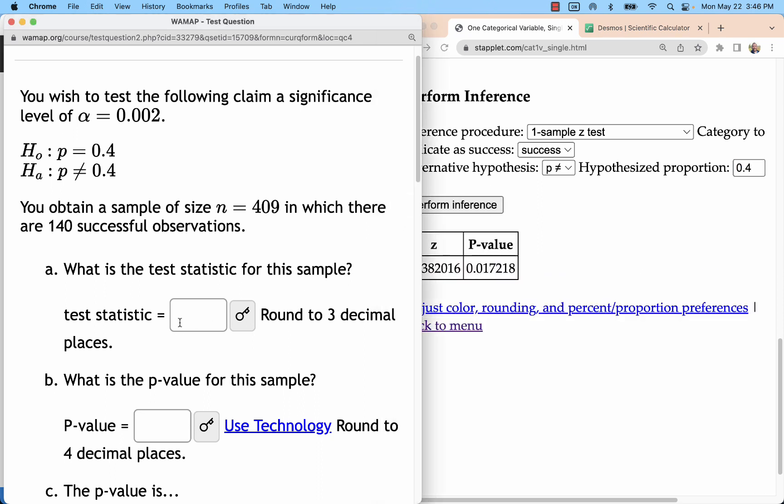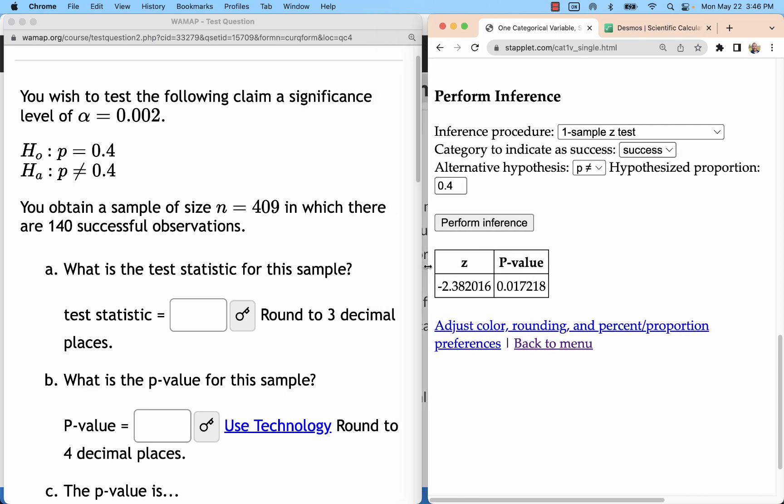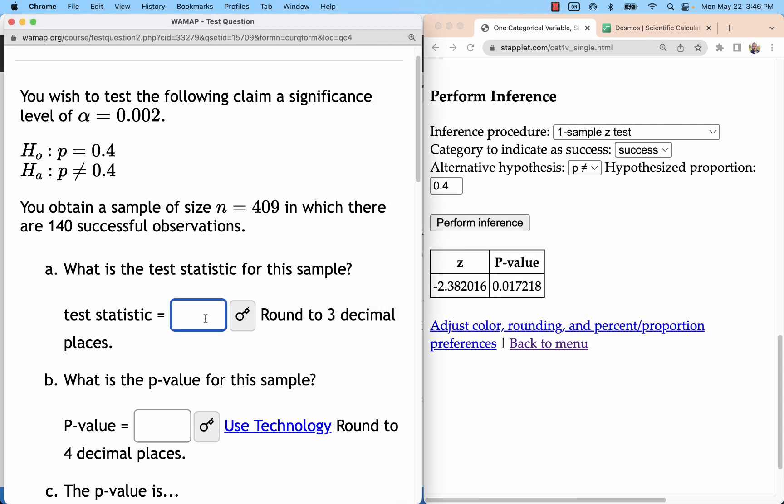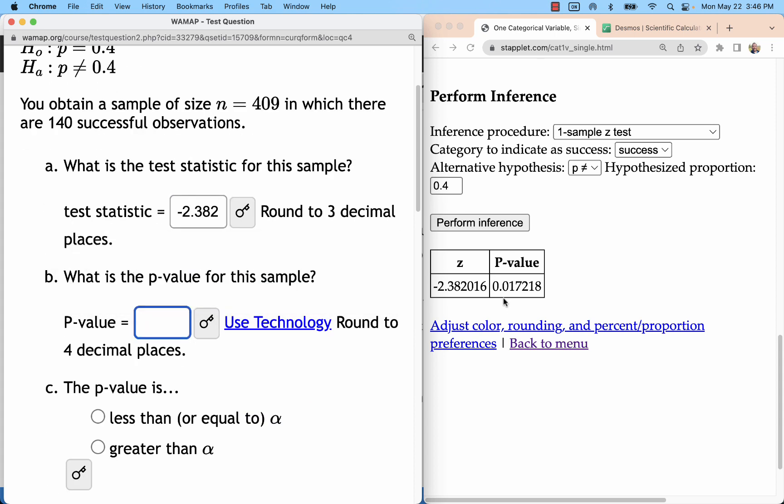So now I have my test statistic that is Z, number of standard deviations. So, essentially, my sample is 2.382 standard deviations below the mean, and that is a p-value of 0.0172.